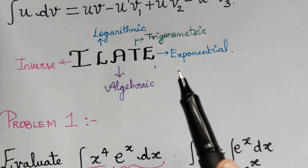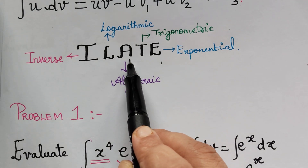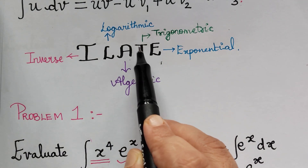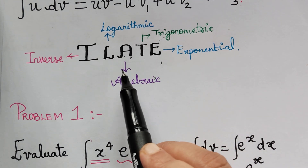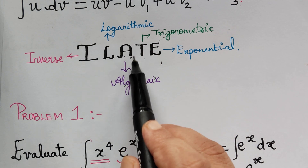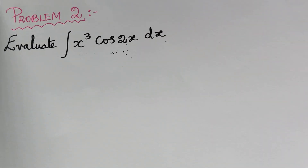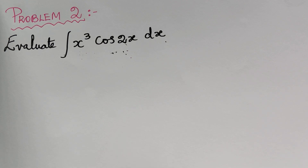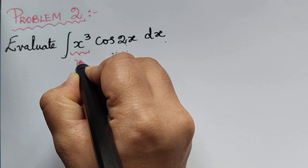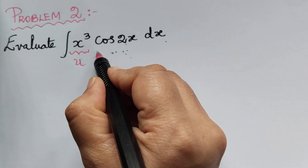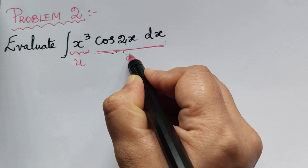So which comes first? We use the order I, L, A, T — before trigonometric functions, algebraic function comes. So it confirms that we have to choose u as the algebraic function. Any function of the form f(x), a polynomial in x, or x to the power n should be taken as the algebraic function. So here we have x cube, which has to be taken as u, and whatever is remaining — cos 2x dx — is taken as dv.